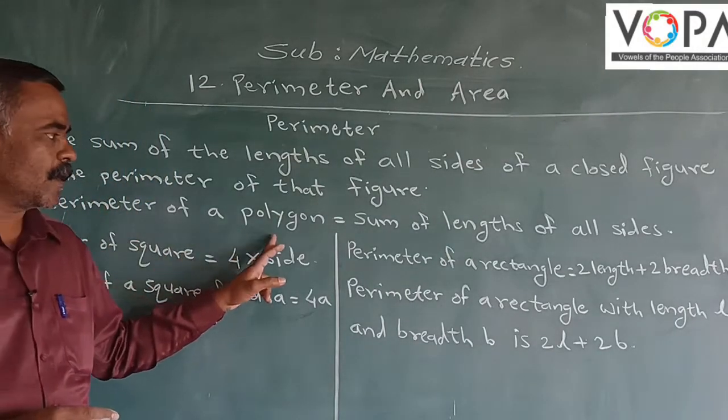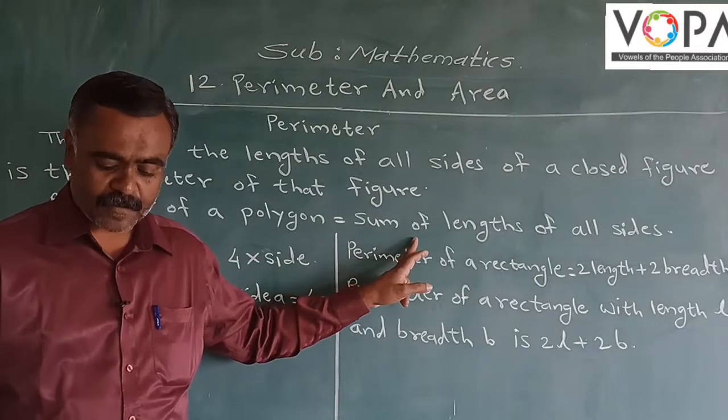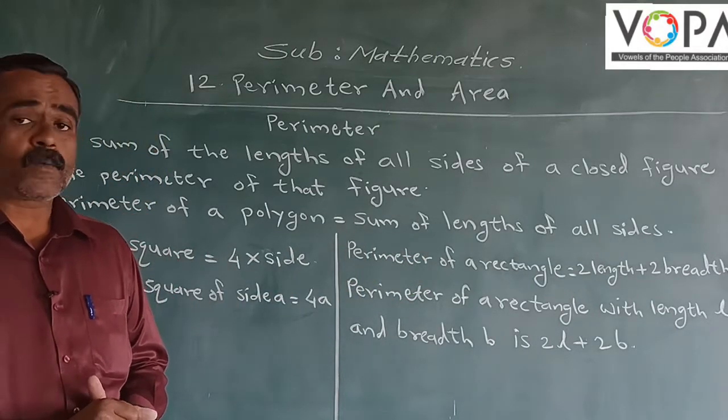The perimeter of a polygon is equal to sum of the length of all sides of the polygon.